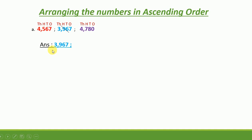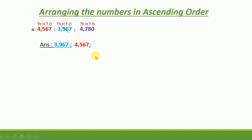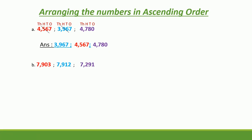We write 3,967 first and remove it. Now we have two numbers remaining: 4,567 and 4,780. Both have 4 in the thousands place — thousands are the same. So we check the hundreds place. The first number has 5 in the hundreds place; the second has 7. Between 5 and 7, 5 is smaller. So 4,567 is the next smallest number. That leaves 4,780 as the greatest number. This is how we arrange numbers in ascending order.